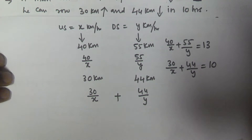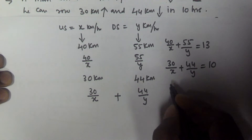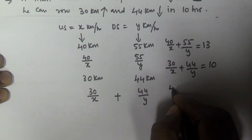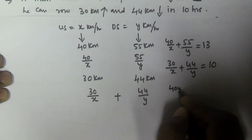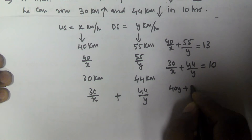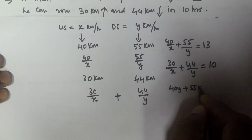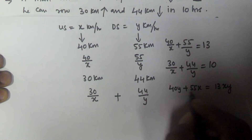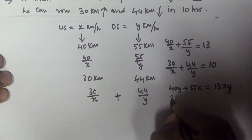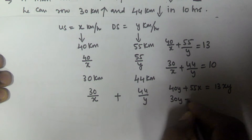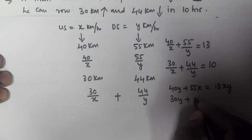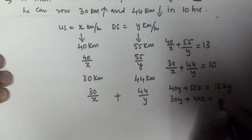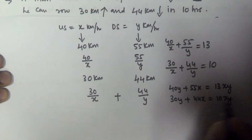If we cross-multiply and solve these two equations, they become: 40y plus 55x equals 13xy, and the second equation is 30y plus 44x equals 10xy.